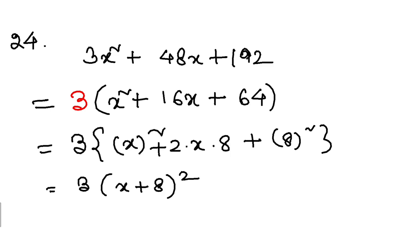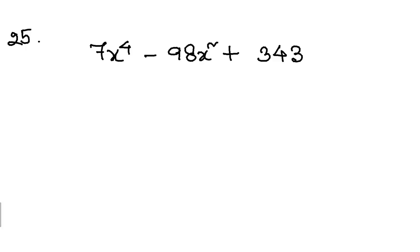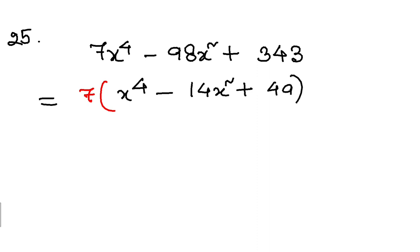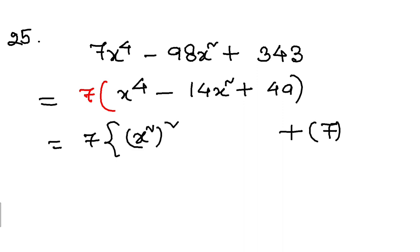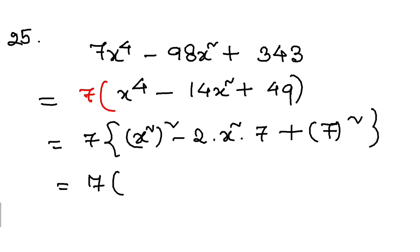Let's move on to question number 25. I will take 7 common, so 7 is out and I am left with x to the power 4 minus 14x square plus 49. This means x to the power 4 is x square whole square, and 49 is 7 whole square — it is 49, not 4. In between I have minus 2 into x square into 7. So this means a square minus 2ab plus b square, giving a minus b whole square. That is question 25.